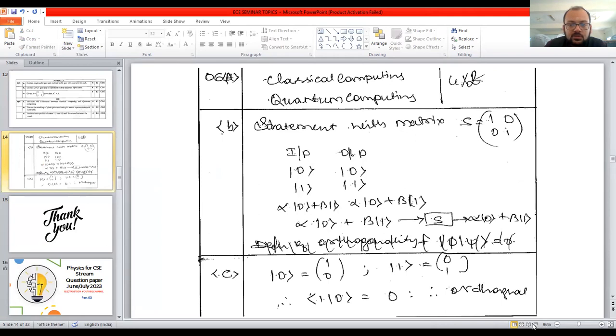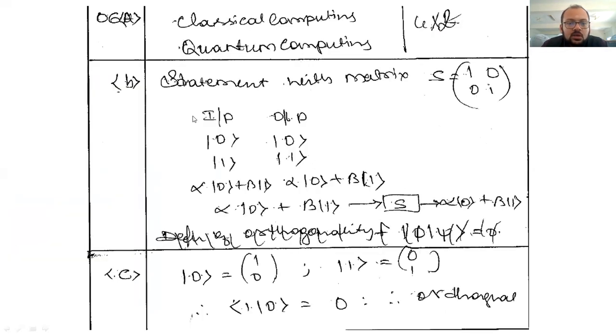You can go through question number six B. This answer you can proceed. The statement with the matrix, the different states you are supposed to explain like this. Each has, each step has the weightage.